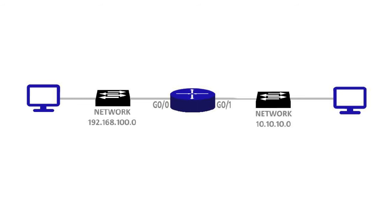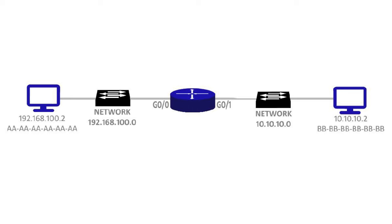Every node on a network has an IP address and a MAC address — two addresses. This first host on the left-hand side is using IP address 192.168.100.2 with all A's for its MAC address — AA-AA-AA-AA-AA-AA. The host on the right-hand side is in the 10.10.10.0 network, so it has an IP address of 10.10.10.2, and it's going to have all B's for its MAC address. These are not real MAC addresses; this is just to make the example really simple.